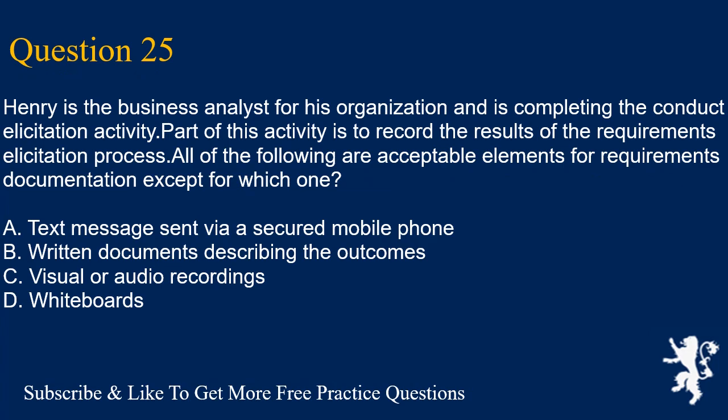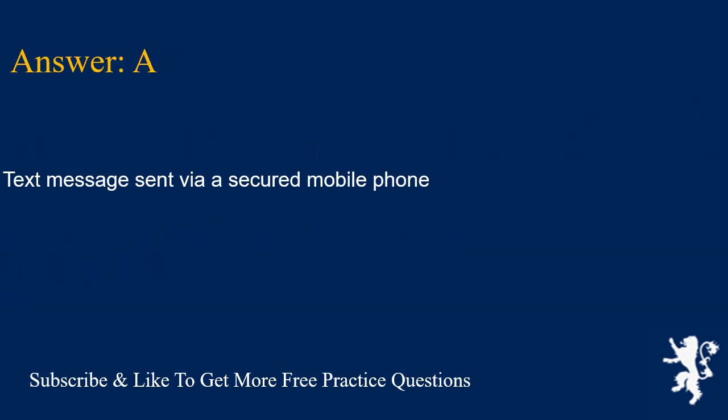Question 25: Henry is the business analyst for his organization and is completing the conduct elicitation activity. Part of this activity is to record the results of the requirements elicitation process. All of the following are acceptable elements for requirements documentation except for which one? A. Text message sent via a secured mobile phone. B. Written documents describing the outcomes. C. Visual or audio recordings. D. Whiteboards. Answer is A. Text message sent via a secured mobile phone.